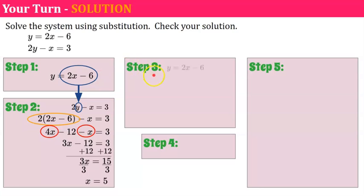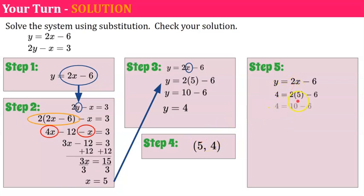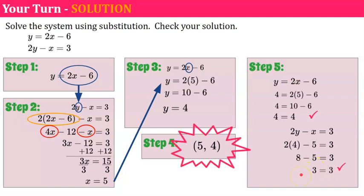To get 3x alone, add 12 to each side. 3x equals 15. Divide both sides by 3, and x equals 5. Step three: go back to the equation from step one and replace x with 5. That's 2 times 5 is 10, subtract 6, so y equals 4. Ordered pair: (5, 4). Check: first equation — replace y with 4 and x with 5. 2 times 5 is 10 minus 6 is 4 — it checks. Second equation — replace y with 4 and x with 5. 2 times 4 is 8, subtract 5 is 3 — it checks. Solution is (5, 4).